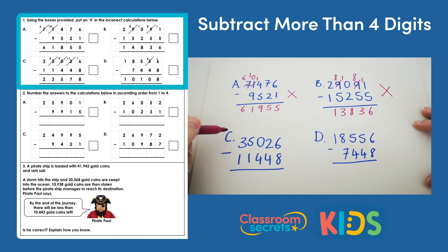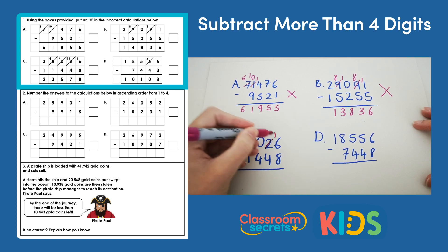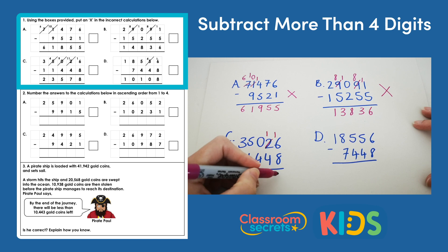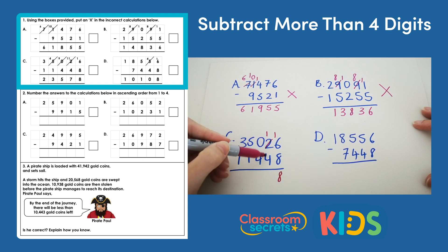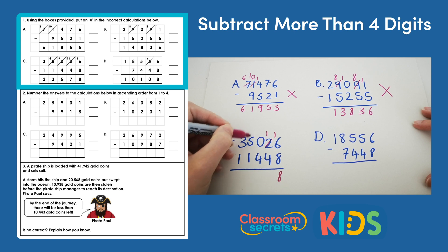C: 35,026 subtract 11,448. We can't do 6 subtract 8, so we need to exchange — 16 subtract 8 is 8. 1 subtract 4 — we can't do; we need to do an exchange, however there's nothing in the hundreds column to exchange from, so we're going to need to do multiple exchanges across.